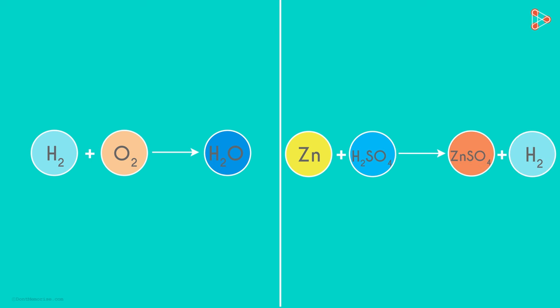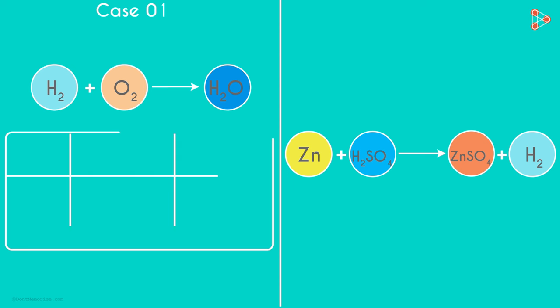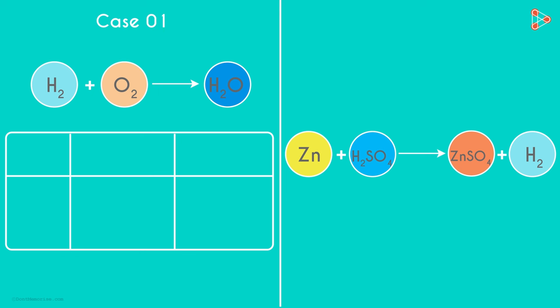Do you notice something interesting about these two equations? Let's draw a table under the first equation. In the first column, we write the symbol of the elements that are involved in the equation.